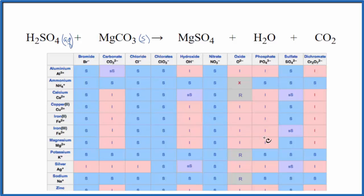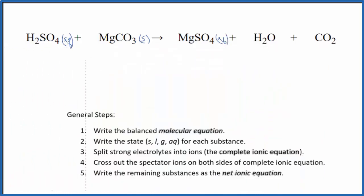Magnesium sulfate, though, we go over here and the sulfate, that has an S. That's soluble in water. It'll dissolve, break apart into its ions. Put a little AQ after it. And then water, that's a liquid. And carbon dioxide's a gas. So we have the states for our ionic equation here.